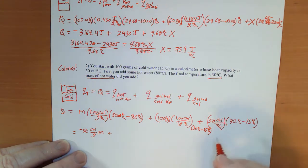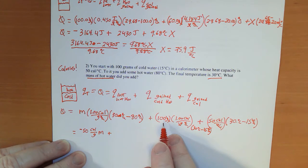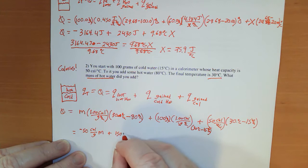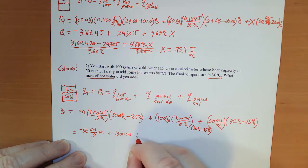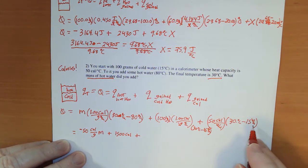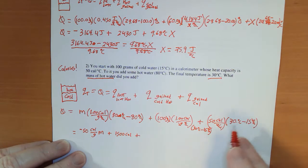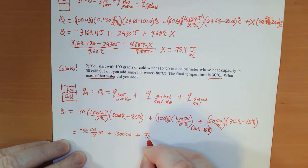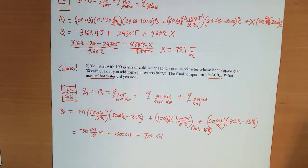Plus, 30 minus 15 is 15 times 100, so that's going to be 1,500 calories. Plus, 30 minus 15 is 15, 15 times 50, well 10 times 50 is 500 plus half that, so we have 750 calories.